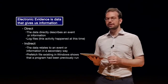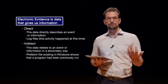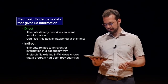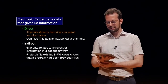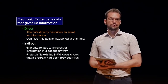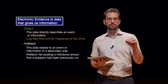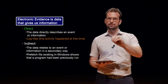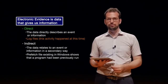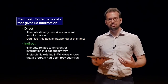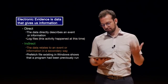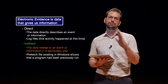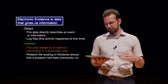Electronic evidence is data that gives us some type of information related to what we're investigating. We can have either direct information, where the data directly describes the event or information — for example, log files, where we can see exactly what happened and when. This user logged into the computer at this time — that's directly observable information. Indirect evidence relates to an event in a secondary way, where we're looking at the effects of some cause.